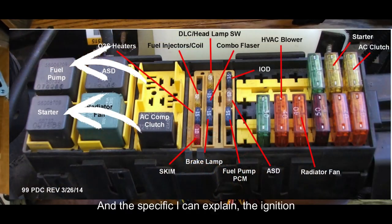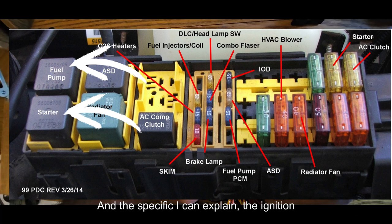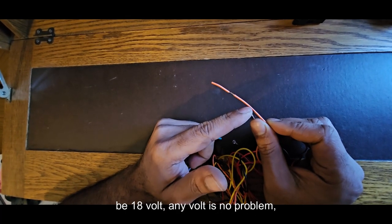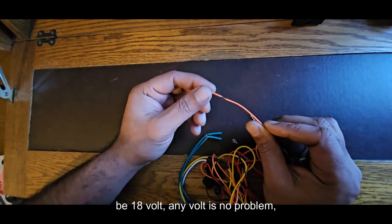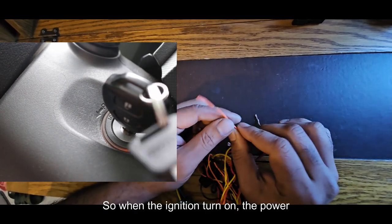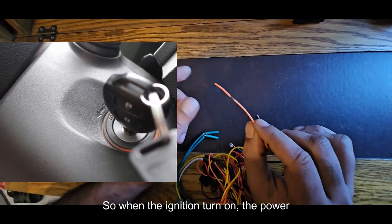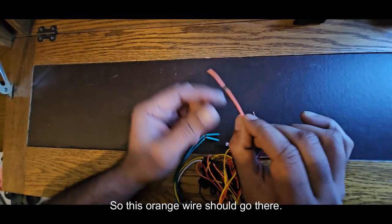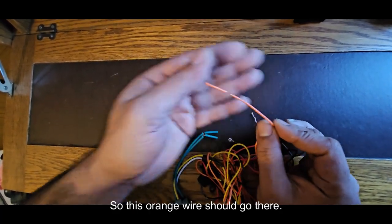Specifically, I can explain the ignition line. It should be 12 volt. It could be 18 volt, any volt is no problem. Electric car, hybrid car, motorcycle, anywhere. So when the ignition turns on, the power comes. When the ignition turns off, the power goes. So this orange wire should go there.